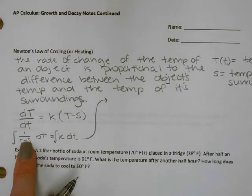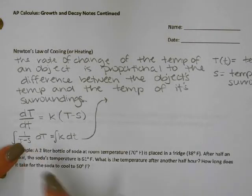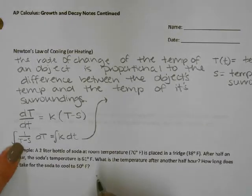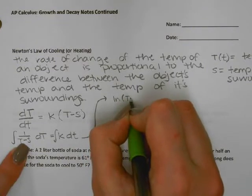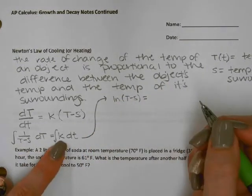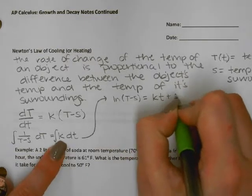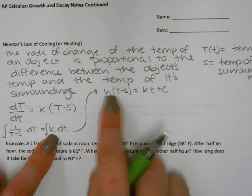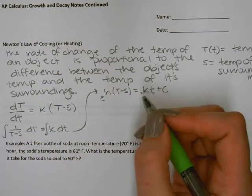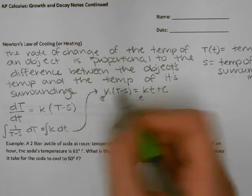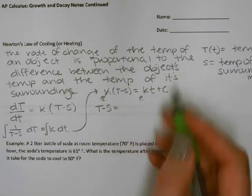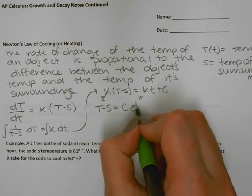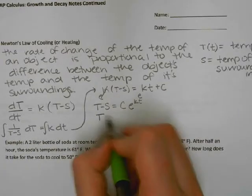Since S is a constant and the derivative of capital T is just one, we can handle this without a full u-substitution. The integral gives us ln of (T minus S) equals kt plus C. Then I raise e to each side, so T minus S equals e to the (kt + C), which we rewrite as a constant times e to the kt. Then we isolate T by adding S to the other side.